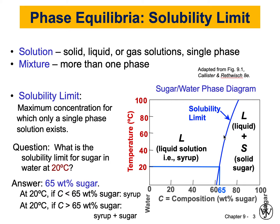Anything below and to the left of this curve, we have one phase, which is a solution — a liquid phase, which is the syrup. And to the right of that solubility limit, we have two phases mixed together. So the material now is a mixture of a liquid and a solid phase. This is the simplest phase diagram that we can get. We're going to move forward to much more complex phase diagrams in the coming videos.